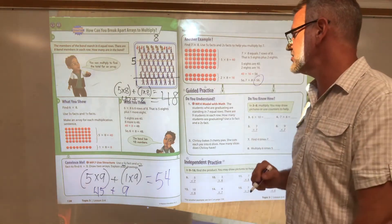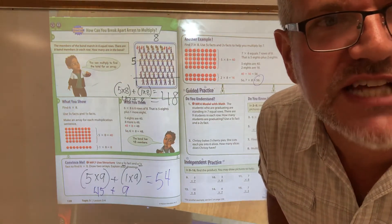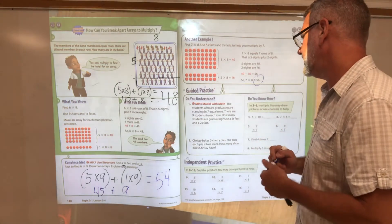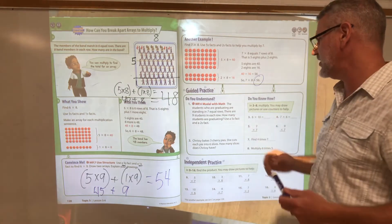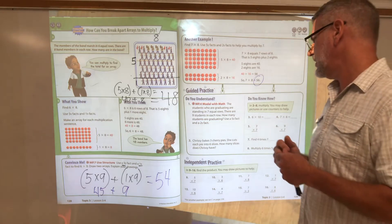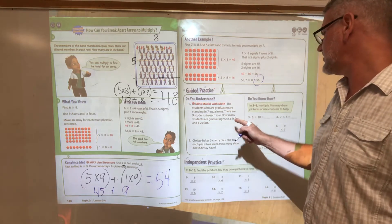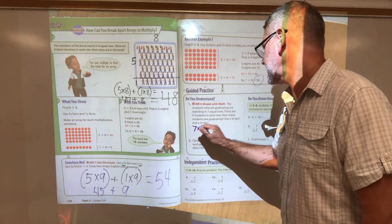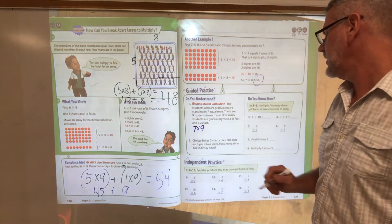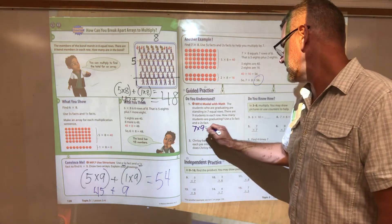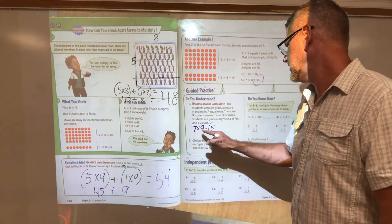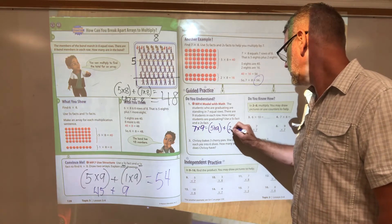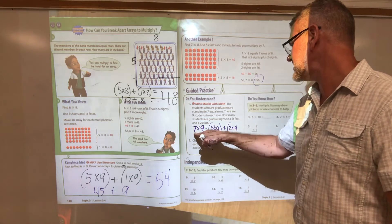The guided practice. Do you understand? The students who are graduating are standing in seven equal rows, and there are nine students in each row. How many students are graduating? Use a fives fact and a twos fact. So we have seven groups of nine. We're going to break that apart. I'm going to take that seven and make it five times nine plus two times nine, because five plus two is seven.